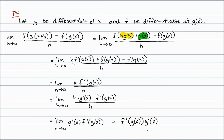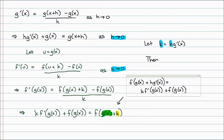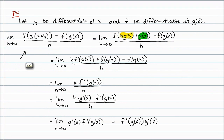Now, most proofs of this are very complicated, and this is one of the more complex proofs as well. However, I tried to keep it as clean as possible. We used the fact that g is differentiable at x and that f is differentiable at g of x. We start with the definition of a derivative — the limit as h approaches 0. We don't know what g of x plus h is, so we create a relationship: g prime of x equals g of x plus h minus g of x over h, which we then solve for g of x plus h.